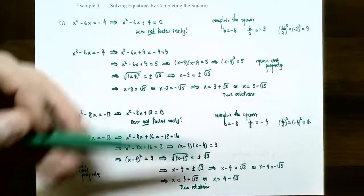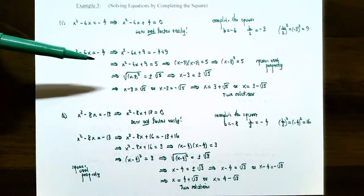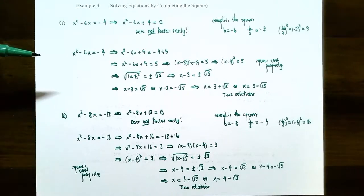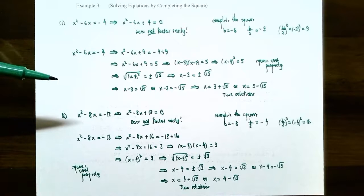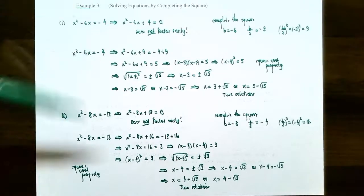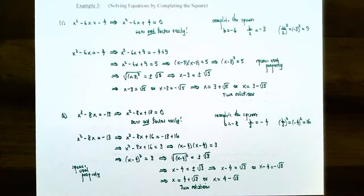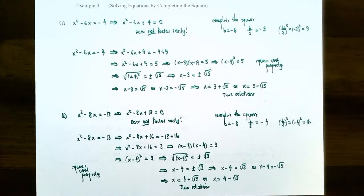So up to this point we have three different methods to solve a quadratic equation: solving by factoring, which is very quick when applicable; solving using the square root property; and solving using completing the square whenever an equation does not factor easily. This is a good place to stop this video. If you have any questions about the square root property or completing the square, please let me know. I'll see you in the next video when we talk about solving quadratic equations using the quadratic formula and the discriminant.